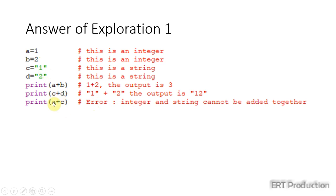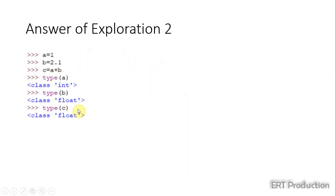Now, for exploration 2. You can see a in this time is an integer, while b is a floating point number. If we add them together, the resulting data will become a floating point number. It makes sense.